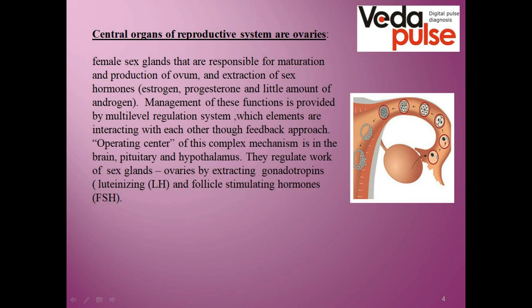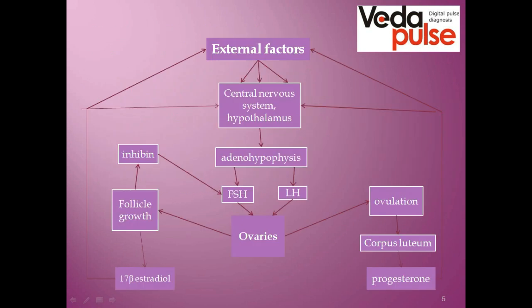As we discussed in the previous webinar, the glands of the first and second level are located in the brain and are called the hypothalamus and pituitary. Important regulating hormones are produced in the hypothalamus; they influence the pituitary, which in turn, depending on the cycle phase, produces two tropic hormones: follicle-stimulating hormone and luteinizing hormone. These regulate the functioning of the ovaries.